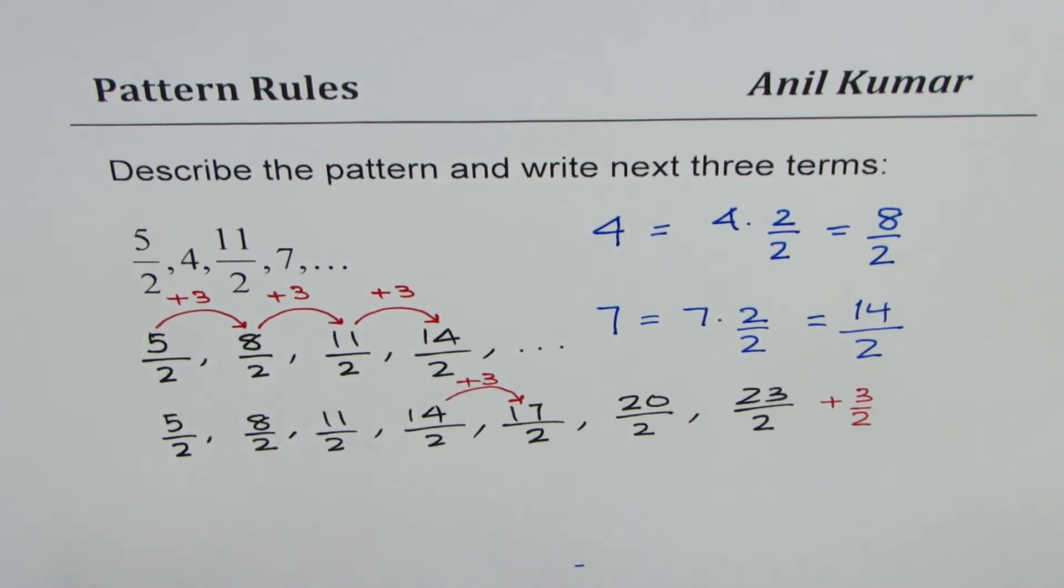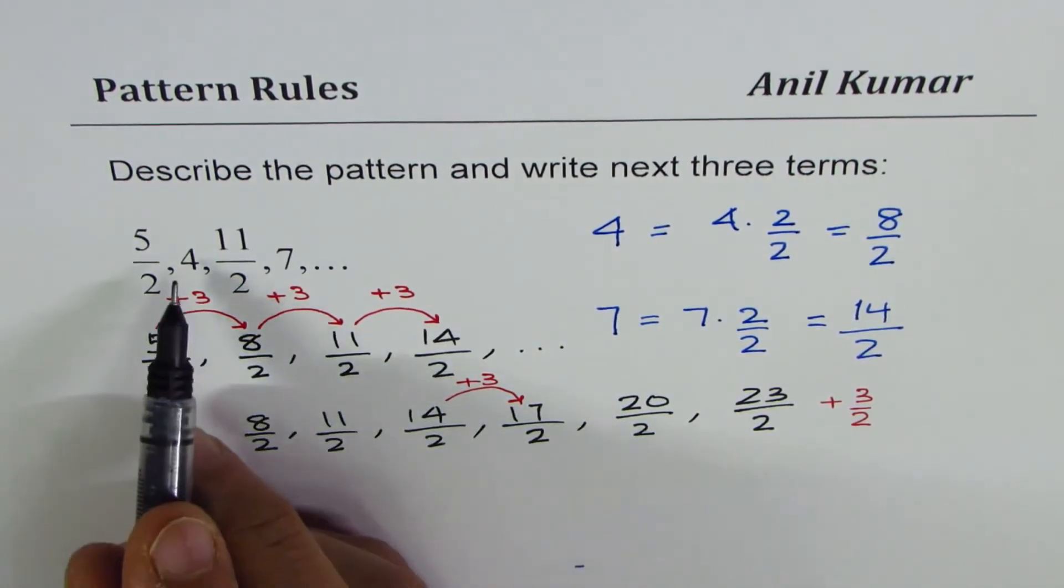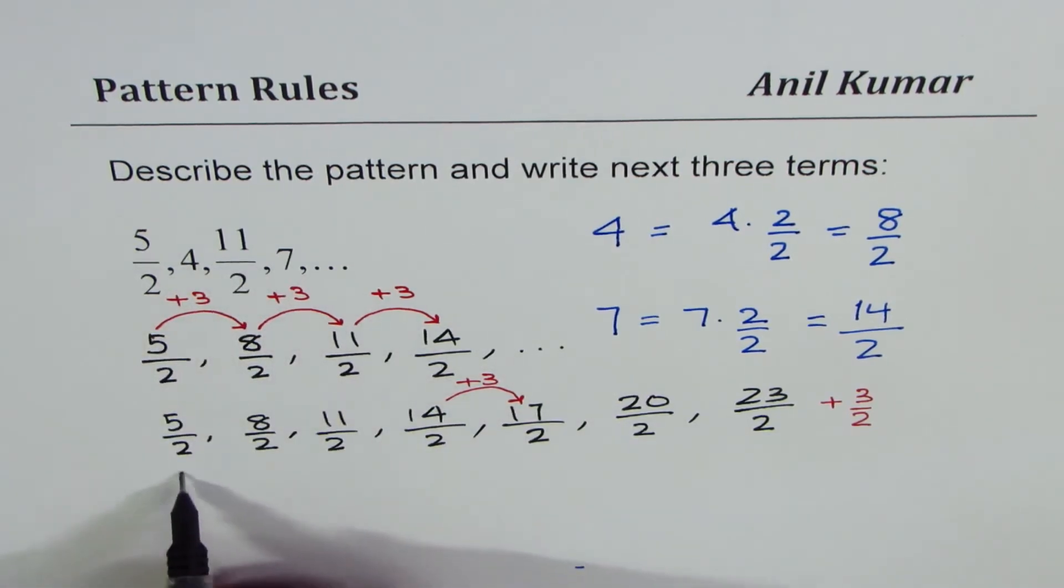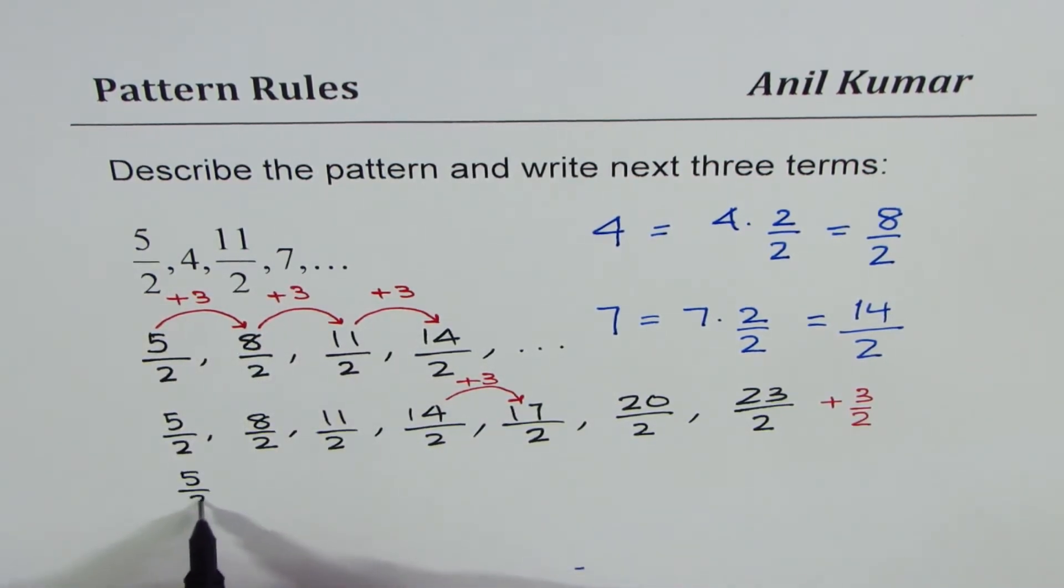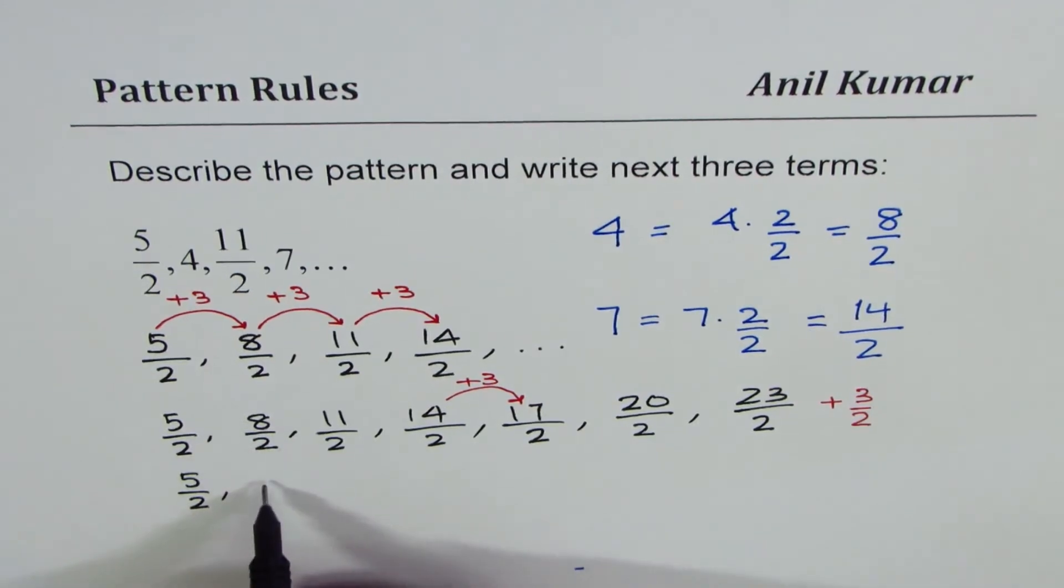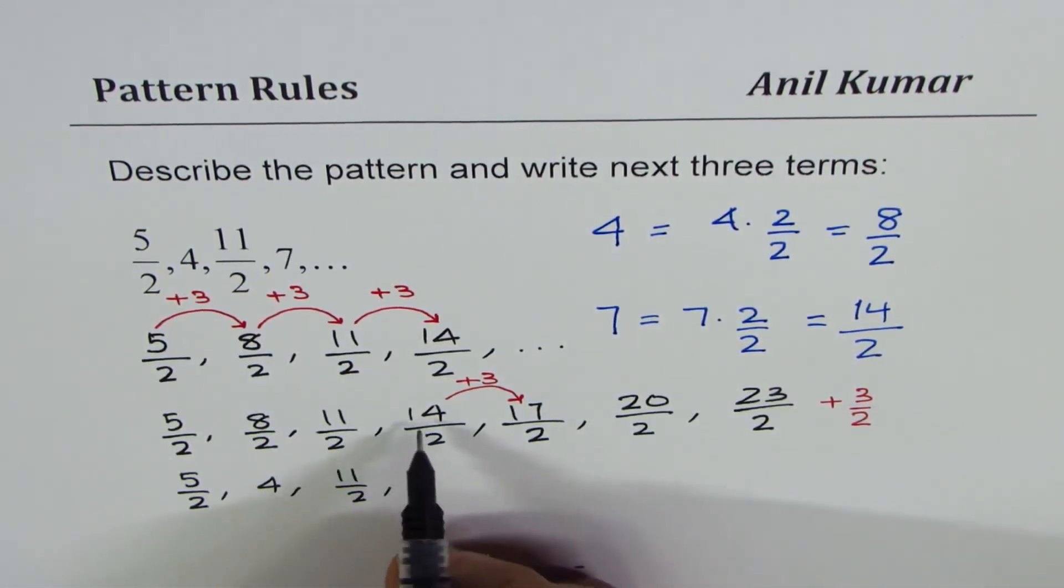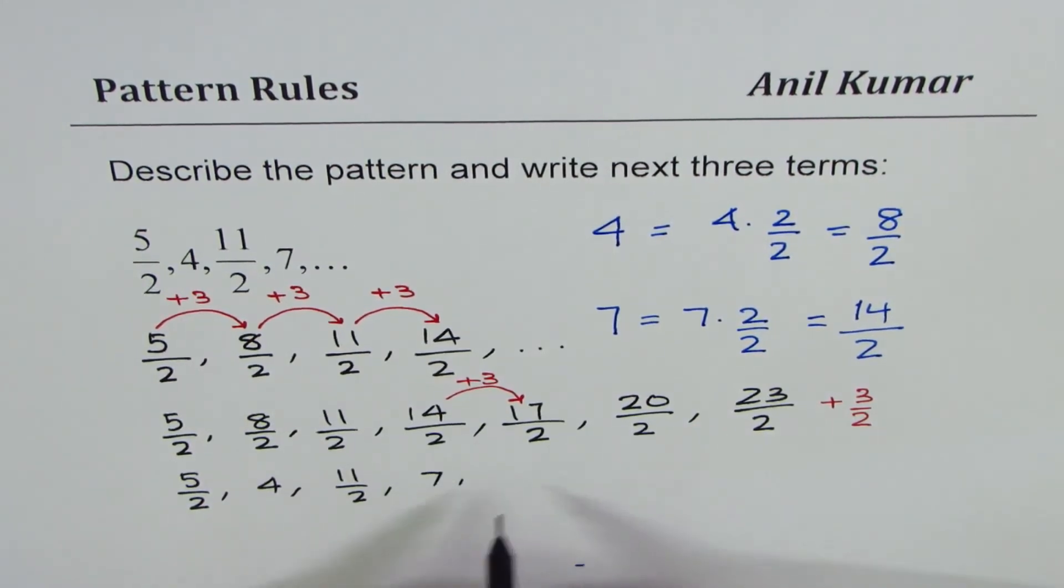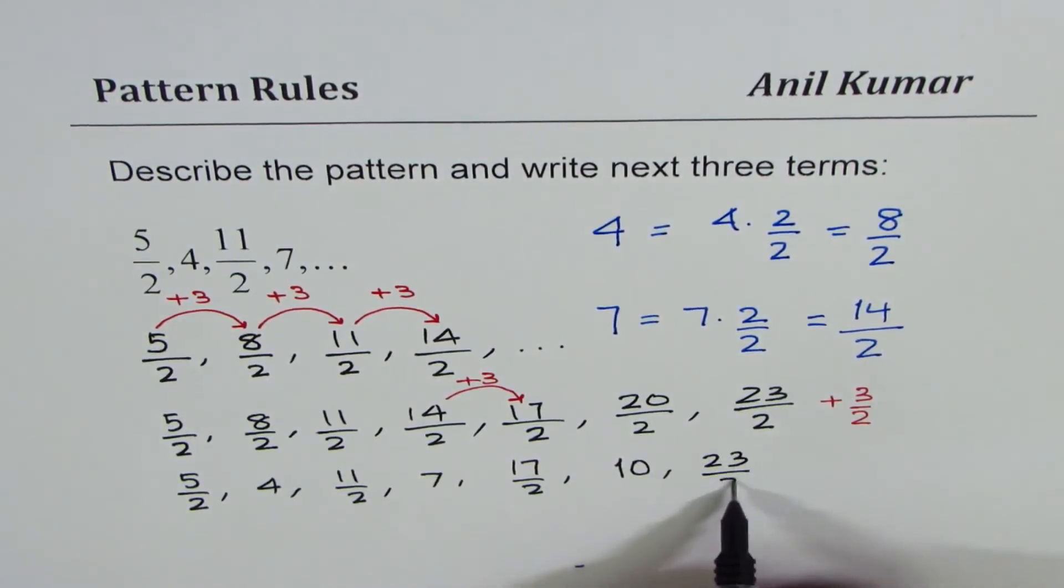So let me rewrite this pattern now as our answer in the form given. So we will have the pattern as 5 over 2, 8 over 2 can be written as 4, 11 over 2, 14 over 2 can be written as 7, then we have 17 over 2, 20 over 2 can be written as 10, and we have 23 over 2. So that is how the pattern grows.